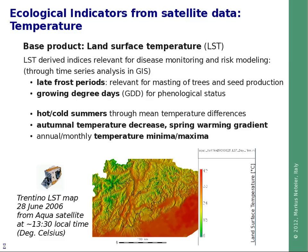We have focused on the land surface temperature product, from which a series of indicators can be derived. These temperature-related products are of great relevance for several disease vectors. With four maps per day, we can aggregate to different proxies: for example, late frost period analysis relevant for tree masting, which triggers seed production and rodent presence; growing degree days for the phenological status of plants or mosquitoes; identification of hot and cold summers deviating from average temperatures; autumnal temperature decrease; spring warming gradients relevant for the emergence of ticks and mosquitoes; and common indicators like temperature minima and maxima.